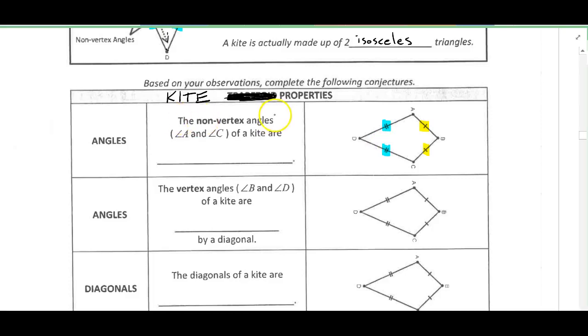We already know one of the properties based on the definition is that we've got two pair of consecutive sides congruent, so I'll just highlight that in the first picture. And the non-vertex angles, so in this case that's A and C, these are actually going to be congruent. So sometimes you're going to have to look at the picture and try to decide what the properties are going to be. So non-vertex angles of a kite are congruent.